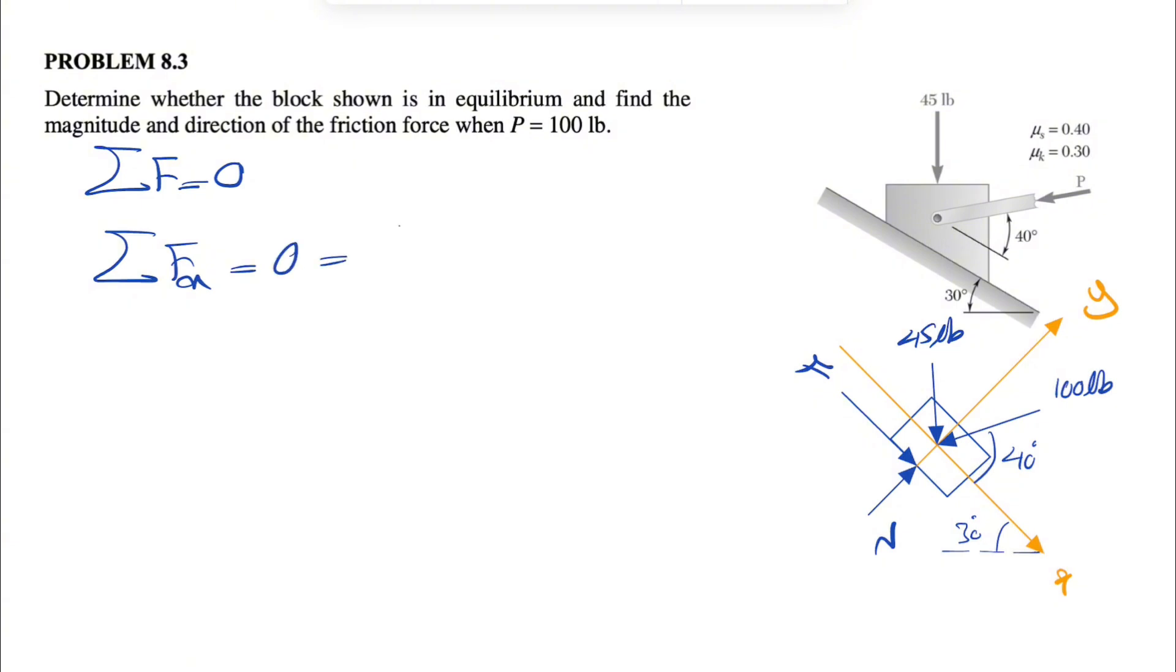So let's start with the F_x. Let's see what we have. So we have the force F acting on positive X axis. We have the X component of the 100 pounds, which is this force in here. So that would be a negative force, so minus 100 pounds times cosine of 40 degrees. And also we have the X component of 45 pounds, this force in here.